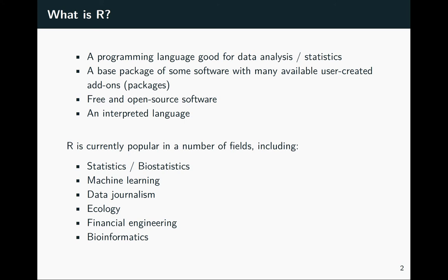R is popular in a number of fields right now. It really grew up in statistics and biostatistics as a tool for that, and has retained its popularity there. It has a number of algorithms for various statistical functions and is often one of the first places where you can find code that brings in a new statistical technique you might want to try. It's also pretty popular in machine learning along with Python, and in other fields from ecology to financial engineering and data journalism.